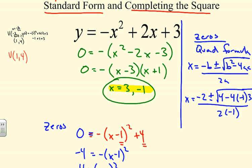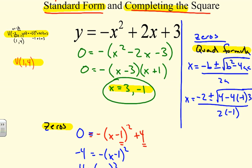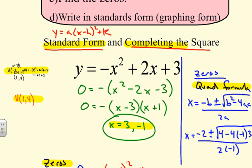We went through several different processes: finding the vertex using the formula, completing the square to find both the vertex and the zeros using standard form, factoring, and the quadratic formula. All are valid methods used whenever needed. We'll go through one more example in the next tutorial.